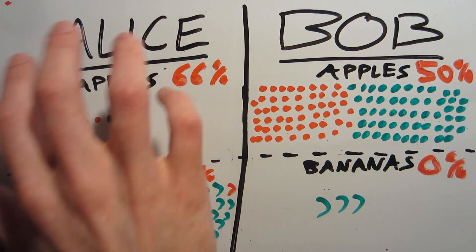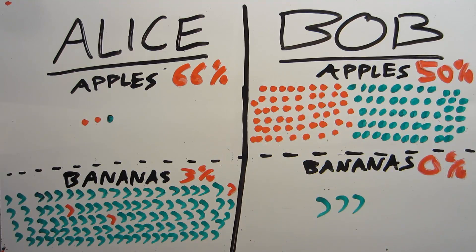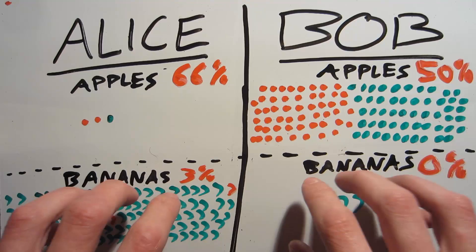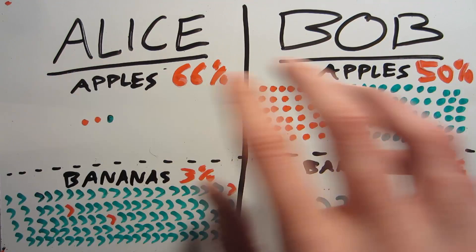So the idea is that when you look at Alice and Bob's overall bad fruit percentages, the differences you see are mostly driven by the differences between apples and bananas rather than the actual vendors themselves.